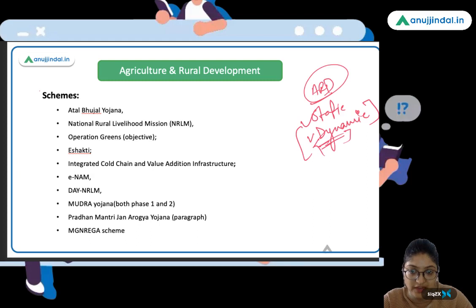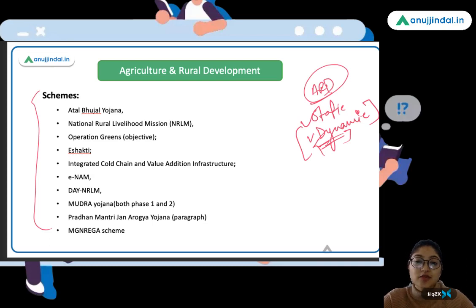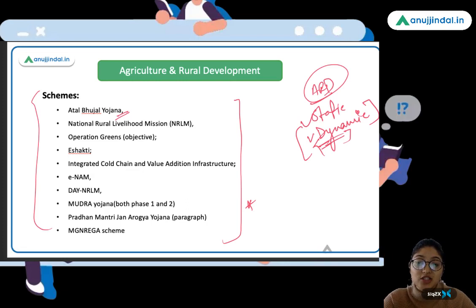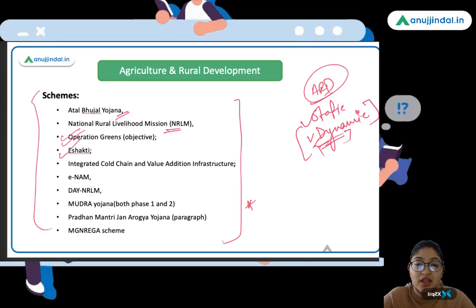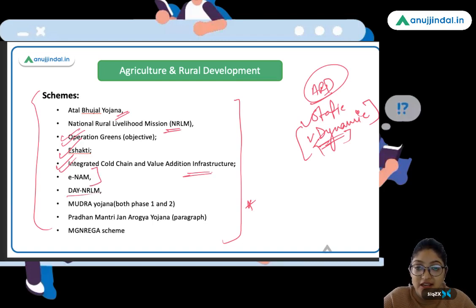I have mentioned the areas where questions were asked in the exam. Looking at the scheme areas, questions have been asked from Atal Bhujal — we're talking specifically about the ARD section, not ESI. Then there are questions from the National Rural Livelihood Mission (NRLM), Operation Green, the E-Shakti program, the integrated cold chain and value addition infrastructure, E-NAM, DAY-NRLM, and Mudra Yojana. For Mudra Yojana, questions were asked in both Phase 1 and Phase 2.